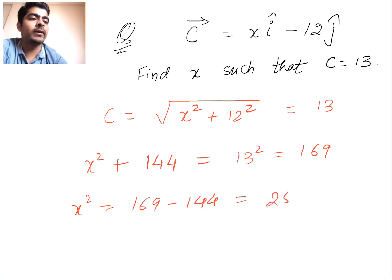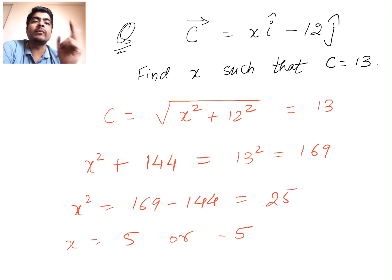Now x squared equals 25, so x can be 5 or minus 5. Both are the possibilities. X could be positive or it could be negative, so my c vector could be 5 i cap minus 12 j cap or minus 5 i cap minus 12 j cap. Both are valid.